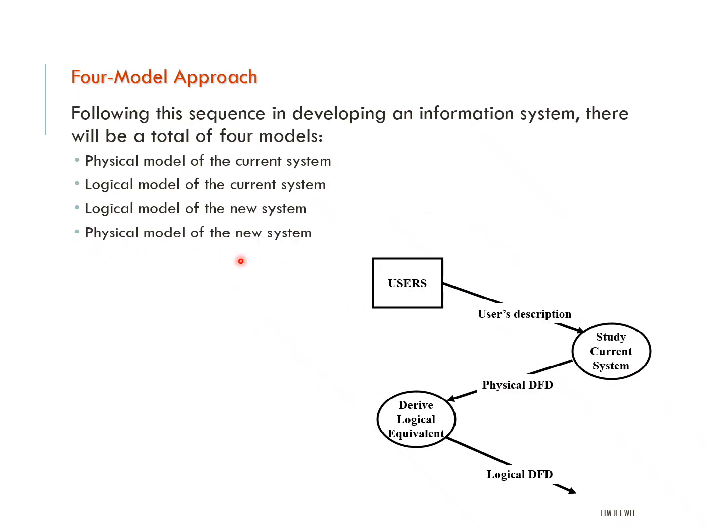So the new physical model is actually at the end. Okay, so current physical, current logical, then you change it to a new logical system, but then you move to the last one, which is the new physical model. So we are actually using four different models at one sequence. That is why it is known as the four model approach.